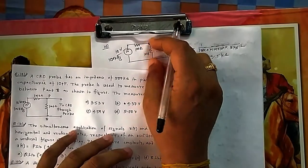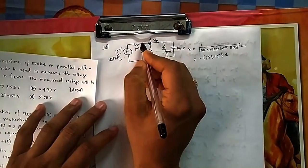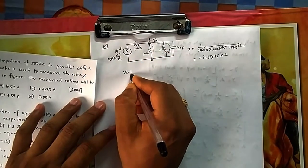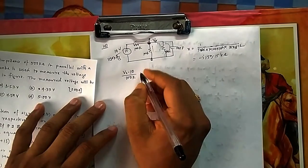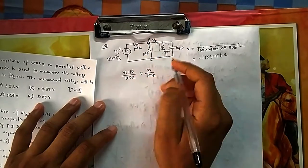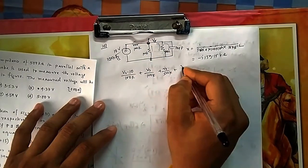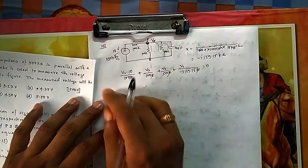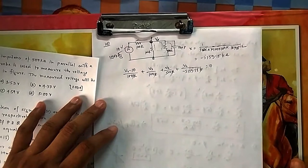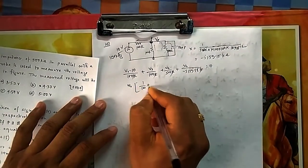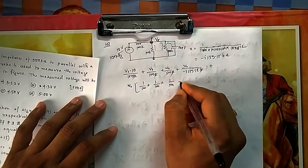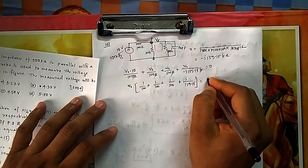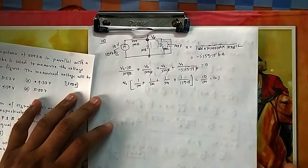Applying nodal analysis at the node gives: (Vx − 10)/100k + Vx/100k + Vx/500k + Vx/(−j159.15k) = 0. Factoring out Vx: Vx × [1/100 + 1/100 + 1/500 + j/159.15] = 10/100 = 0.1. All kilo terms cancel when multiplied through.